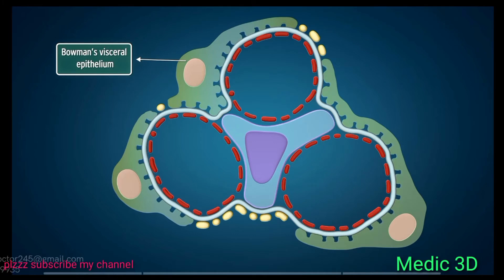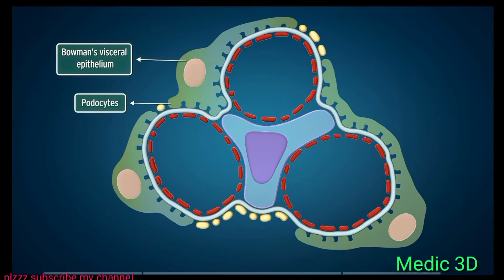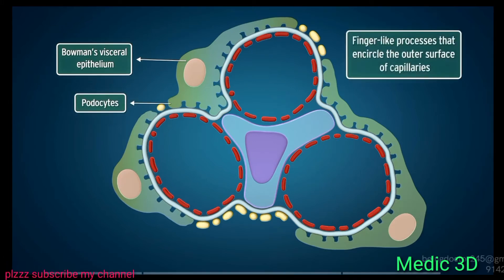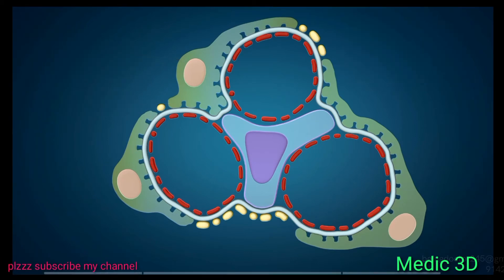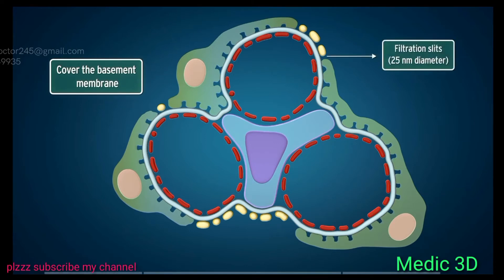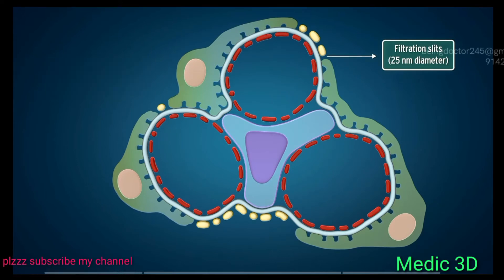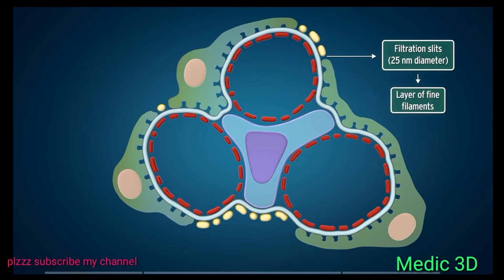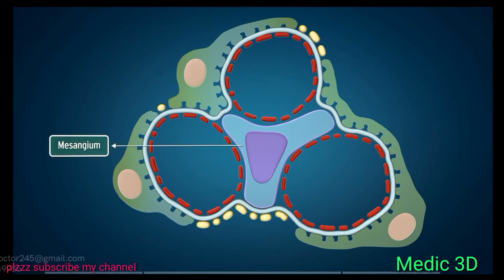The third layer of the glomerular membrane is Bowman's visceral epithelium, formed by special cells called podocytes. The podocytes have finger-like processes that encircle the outer surface of capillaries. These processes interdigitate to cover the basement membrane and are separated by gaps called filtration slits of approximately 25 nm diameter. Each filtration slit is covered by a layer of fine filaments constituting the slit diaphragm. Mesangium is an important component of the renal corpuscle.